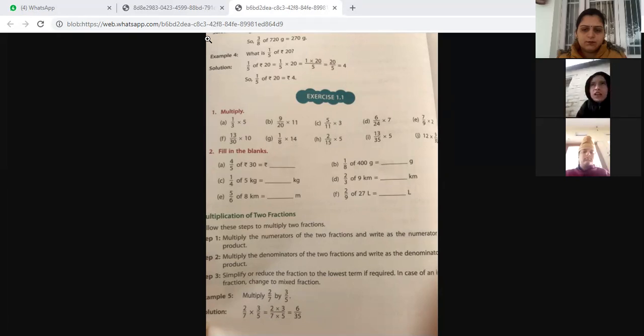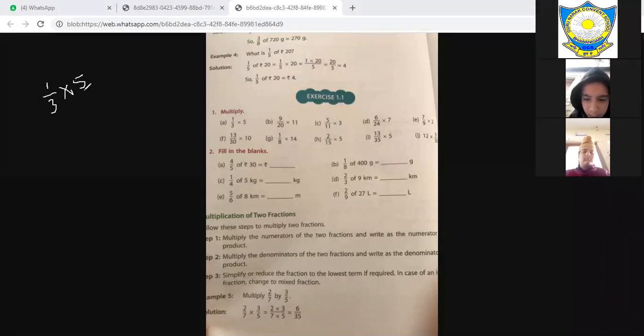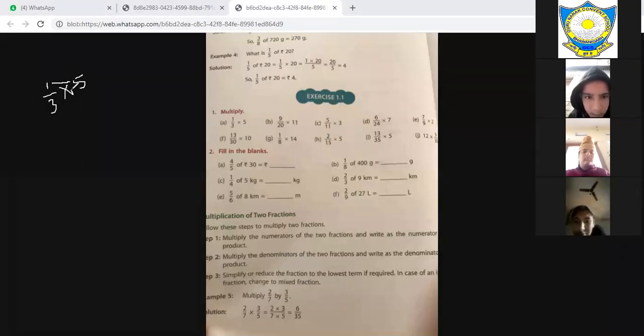We have done previously in class, let's take an overview. One by three multiply with five. Okay, one by three multiply with five, how do we do this? On the black screen we will solve one by three multiply by five. When we do this, what do we do? Multiply with the upper number and the lower number multiply with the lower number, means to say numerator with numerator, denominator with denominator.